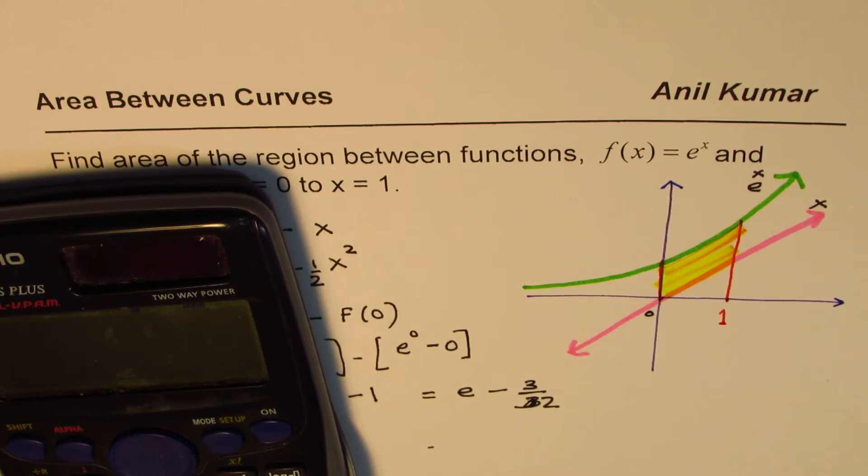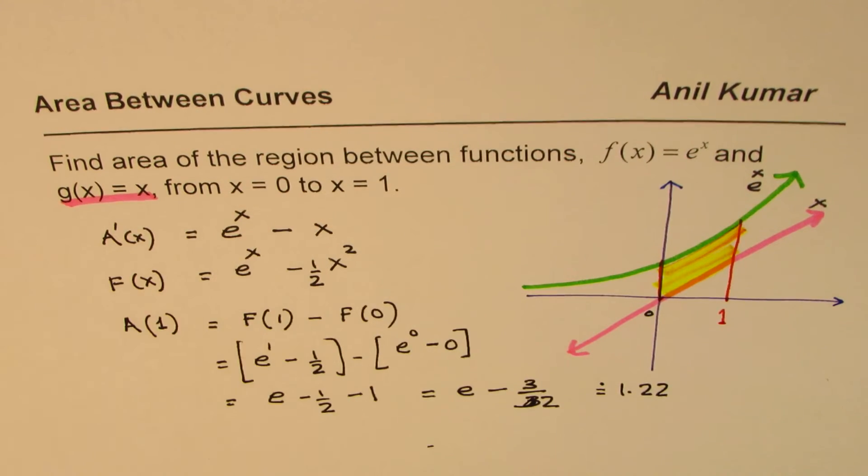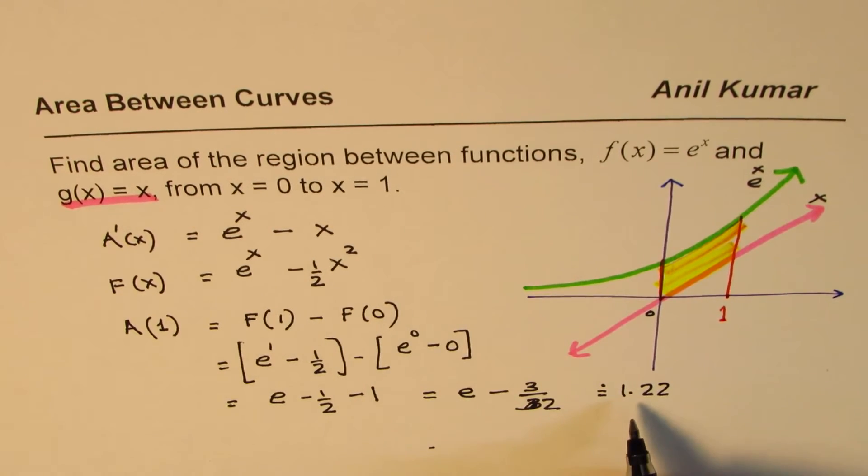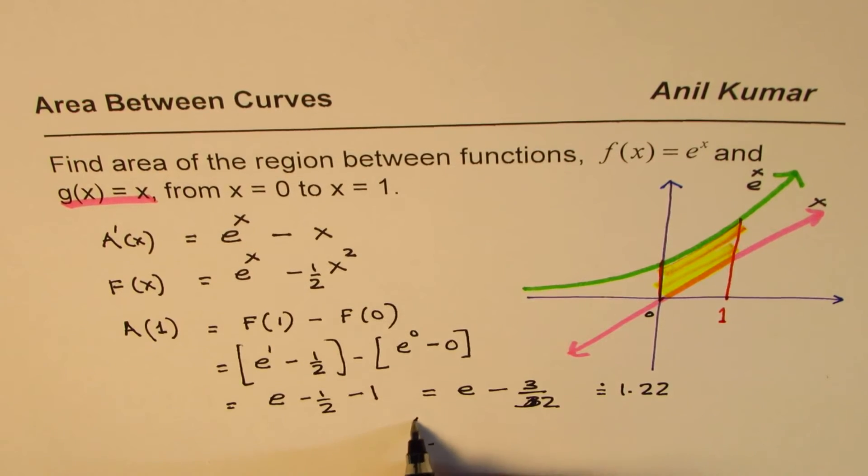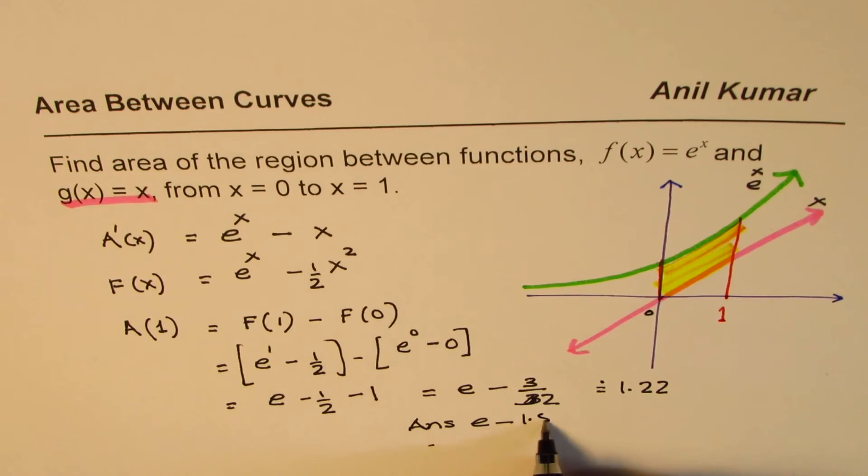So we can use the calculator to approximately get this value, or that is good enough actually. So we have e minus, you can say 1.5 is equal to 1 point, let's say 2, 2 approximately. So you could write to two decimal places as 1.22, or even the answer e minus 1.5 was good enough in unit square.